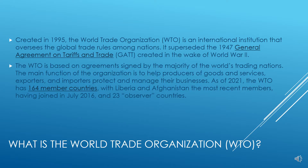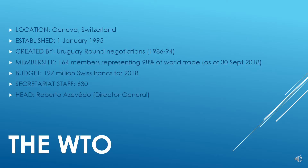Global trade covers the imports and exports of goods and services. The WTO superseded the 1947 General Agreement on Tariffs and Trade, that is GATT, created in the wake of World War 2. The WTO is based on agreements signed by the majority of the world's trading nations. Its main function is to help producers of goods and services, exporters and importers, protect and manage their businesses. As of 2021, the WTO has 164 member countries, with Liberia and Afghanistan the most recent members, having joined in July 2016, and there are 23 observer countries.